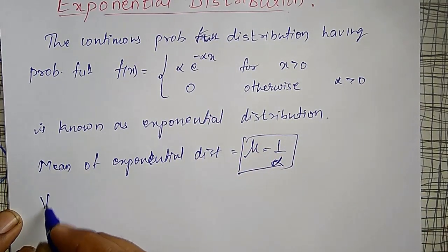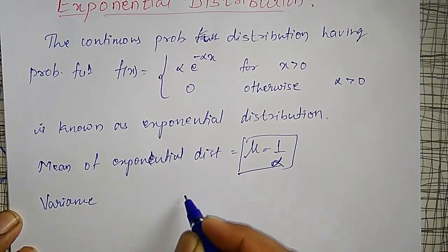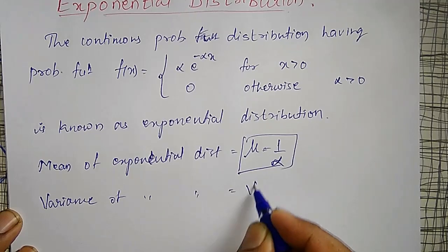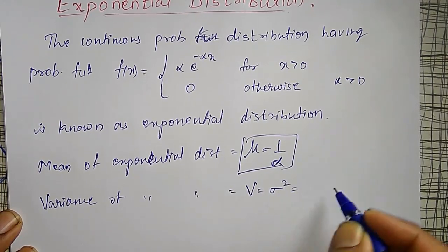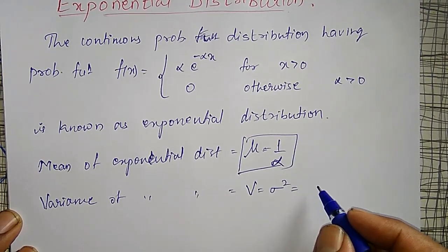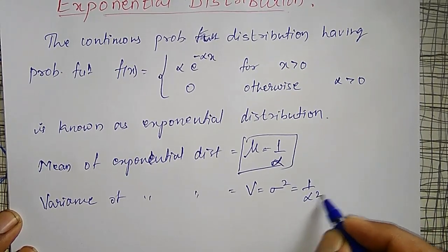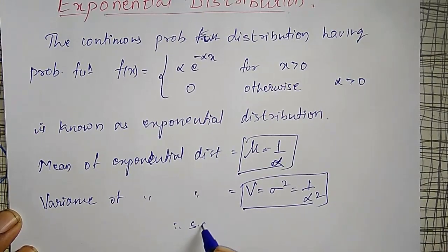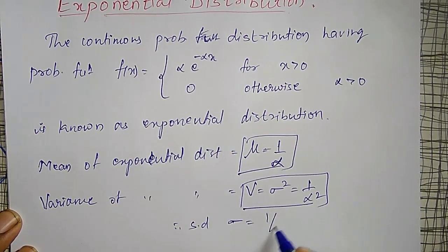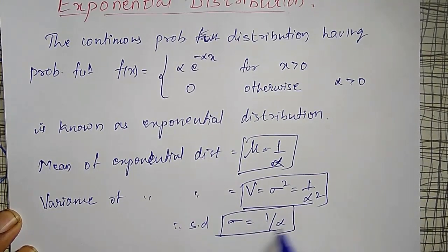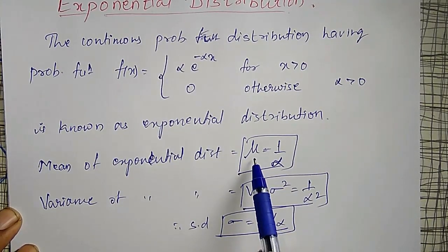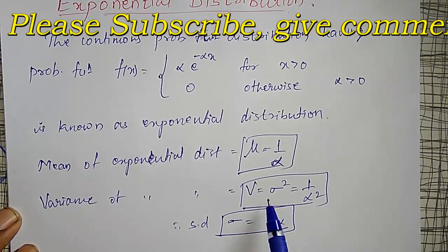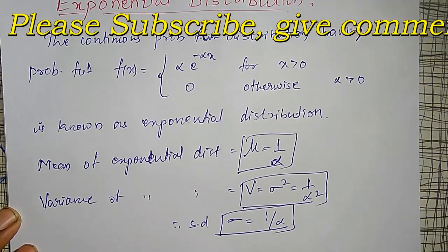As well as the variance of the exponential distribution: σ² = 1/α². I can prove this also. Therefore, the standard deviation σ = 1/α. I have to remember these three results: μ = 1/α, variance = 1/α², and standard deviation σ = 1/α.